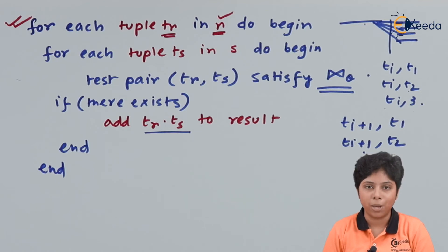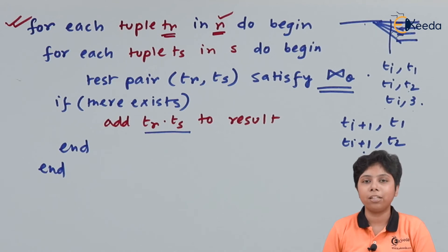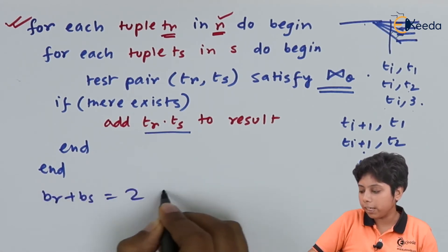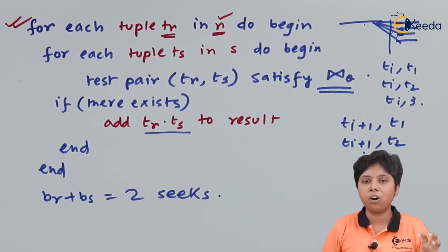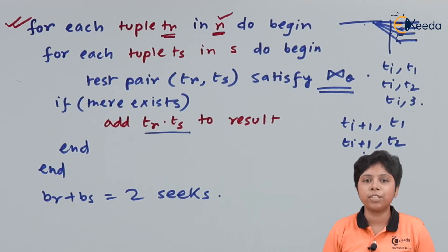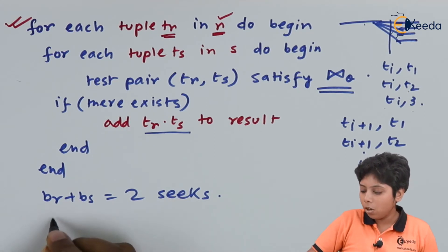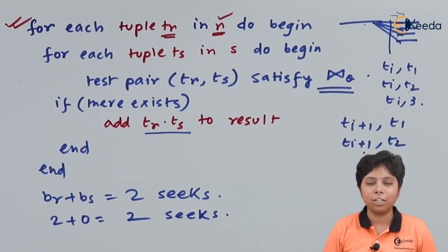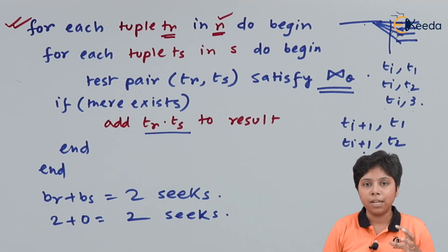Now we look at the cost of nested loop join. If both relations fit in internal memory, we will have br plus bs — that is one block for r and one block for s — so br plus bs becomes 2 seeks, since br is one block holding all tuples in memory. If only the inner relation fits in memory but the outer does not, we need 2 blocks for the outer and 0 for the inner, still giving 2 seeks. So whether both fit in memory or only one does, we need 2 seeks to perform the query.